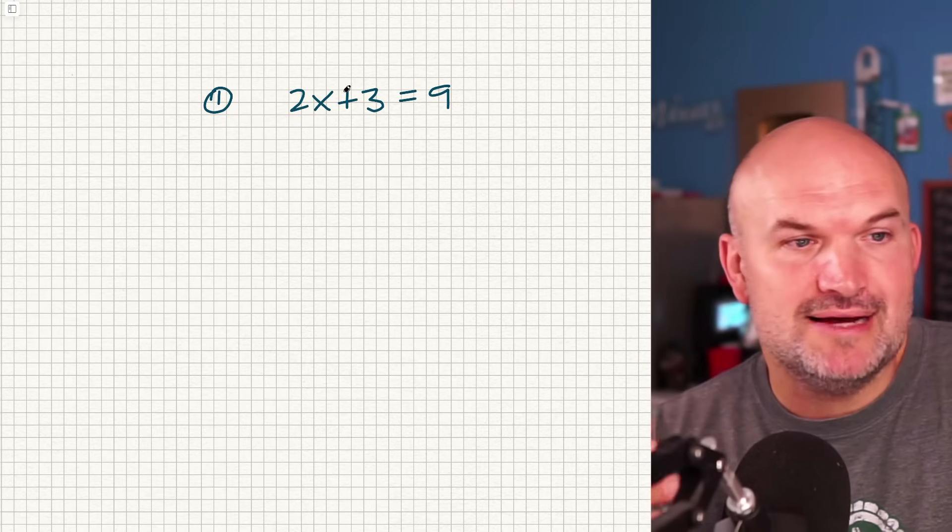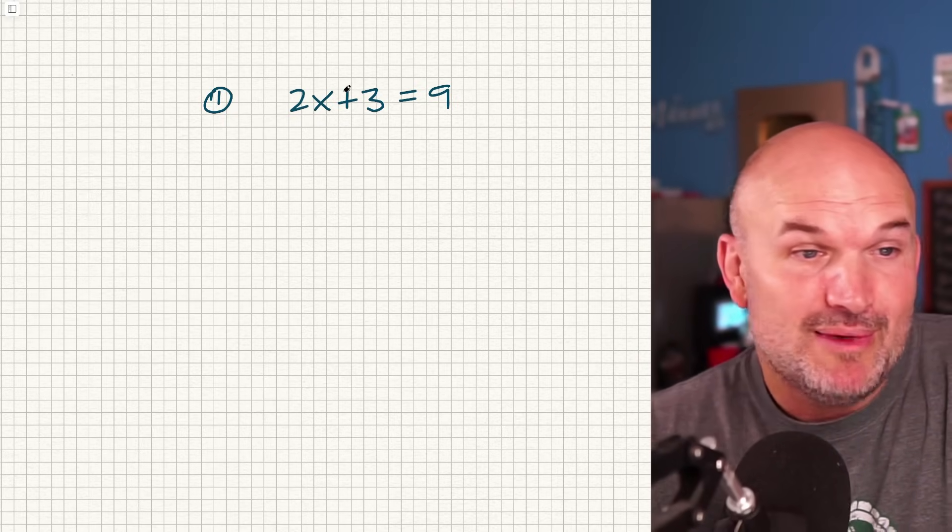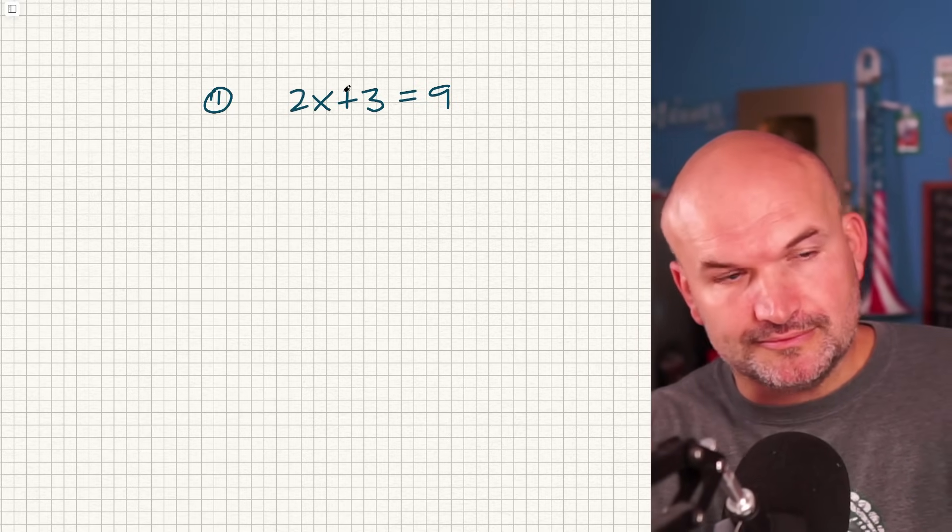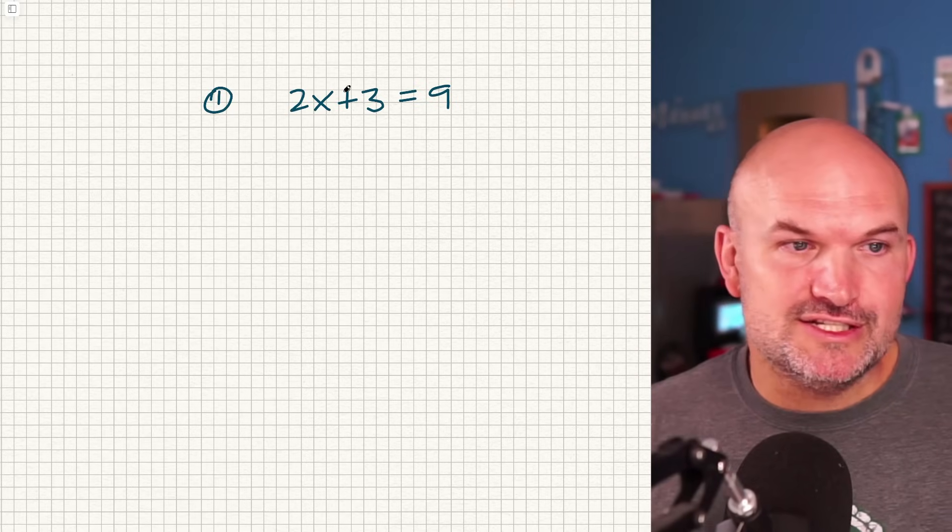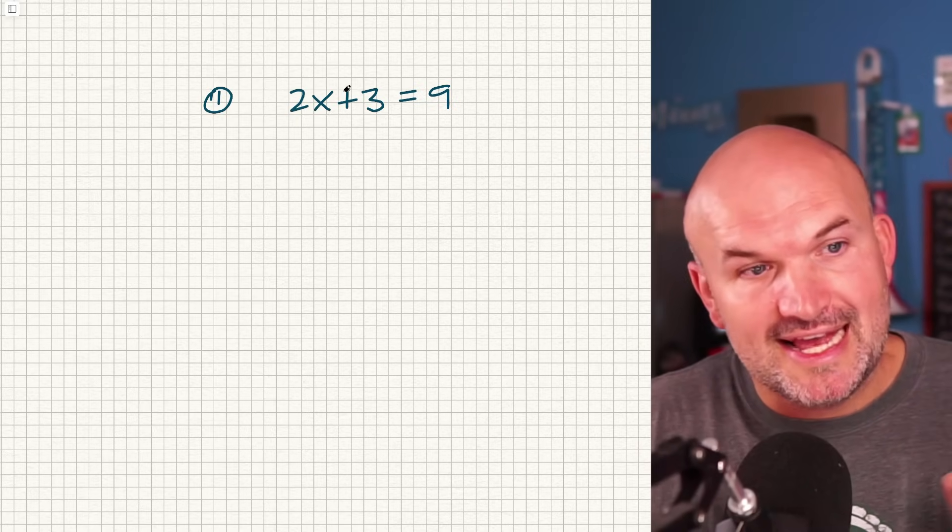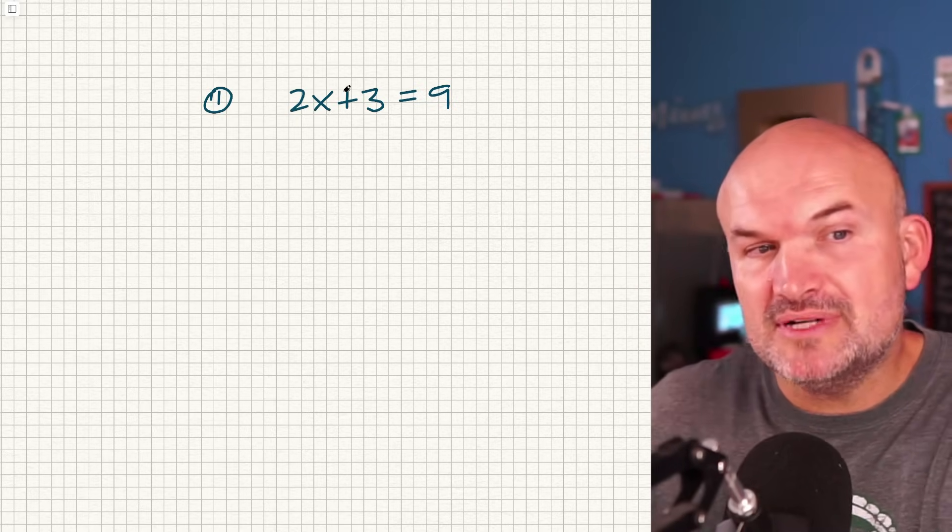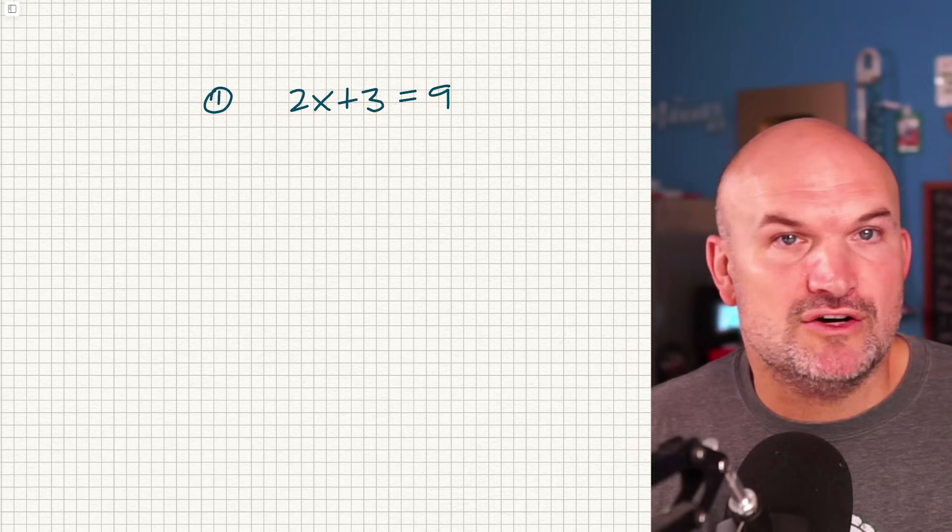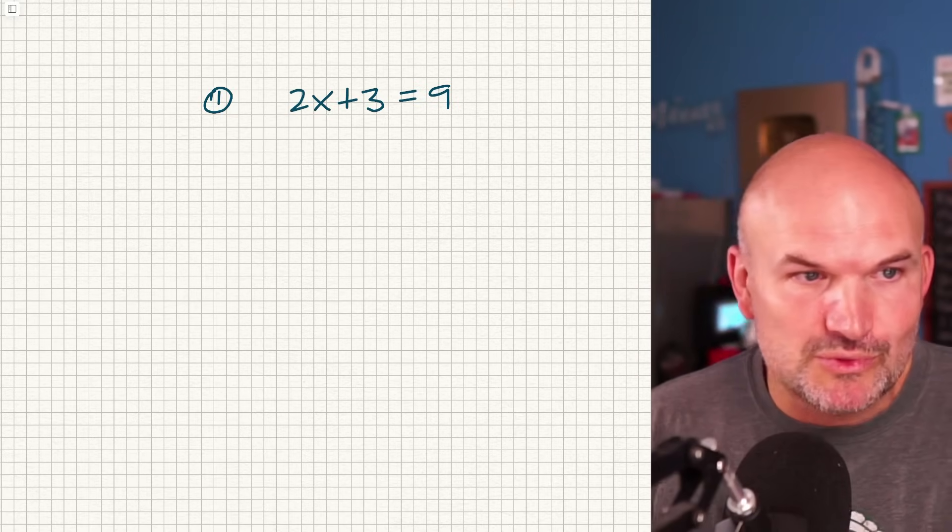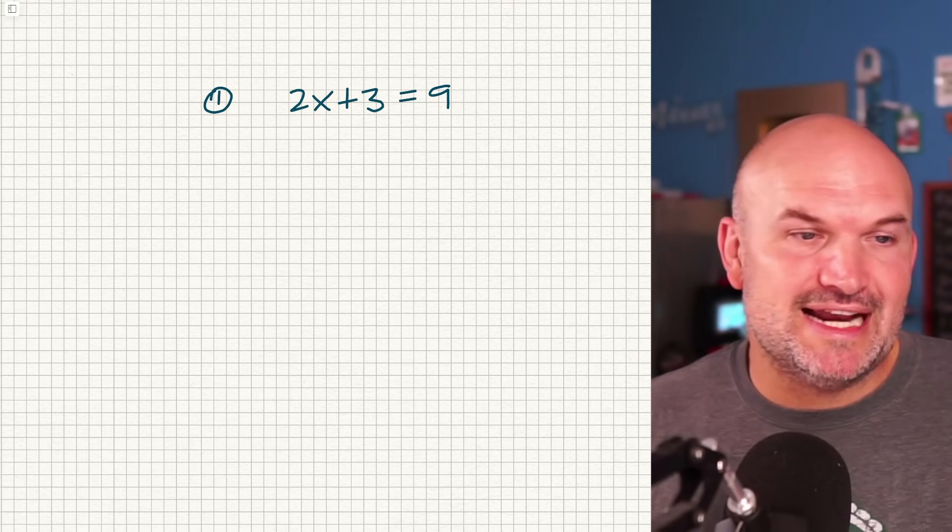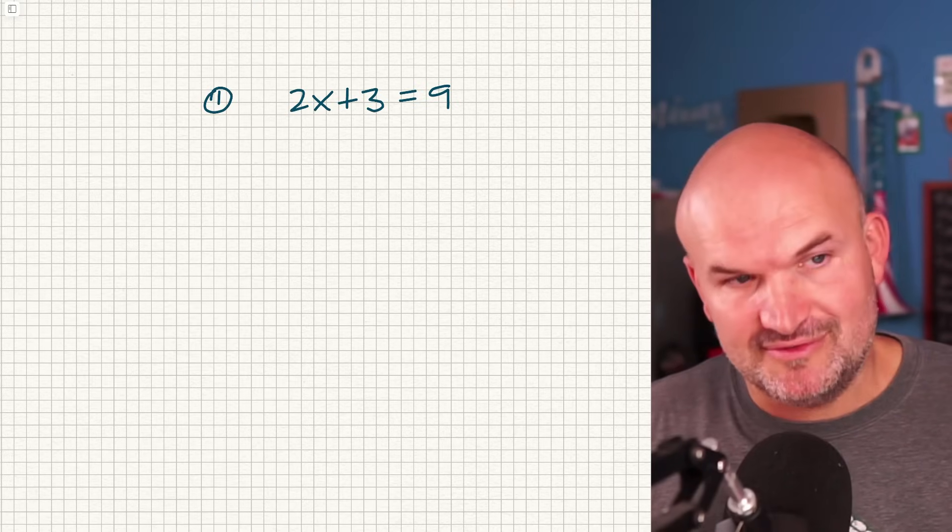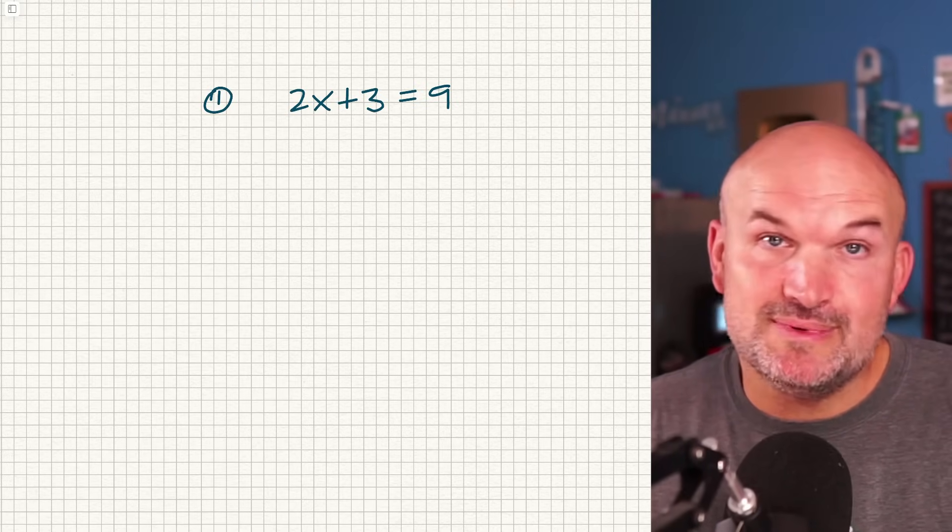A lot of times when we're dealing with two-step equations, you might be able to do the math in your head. You might be able to do the guess and check. But what we're trying to get you to understand is to use this process of reverse order of operations and inverse operations, properties of equality to solve for x because problems will get more difficult. Understanding how to use inverse operations, the reverse order of operations and properties of equality is really going to be helpful for you.